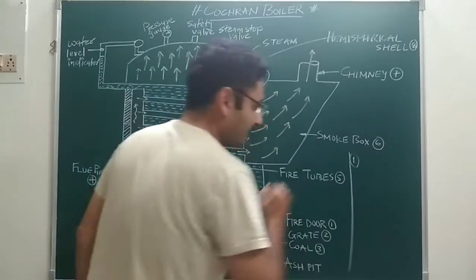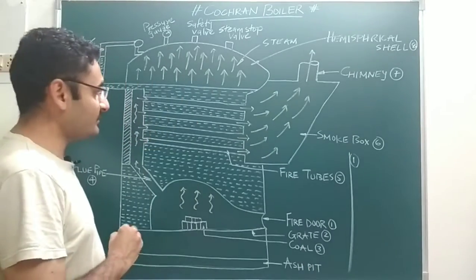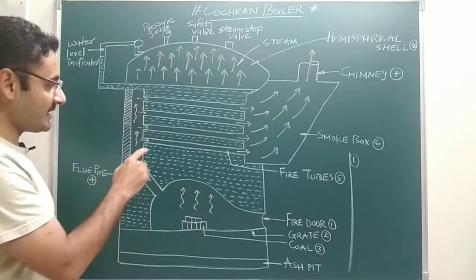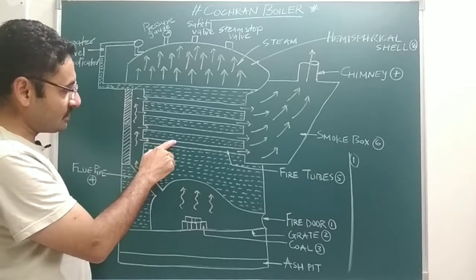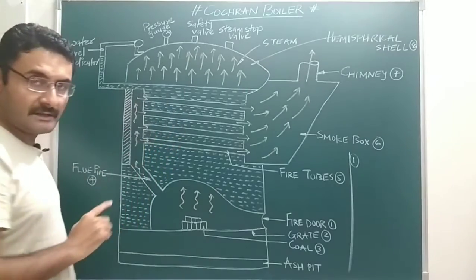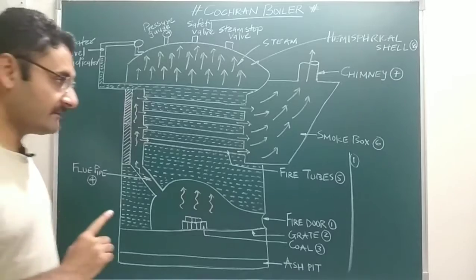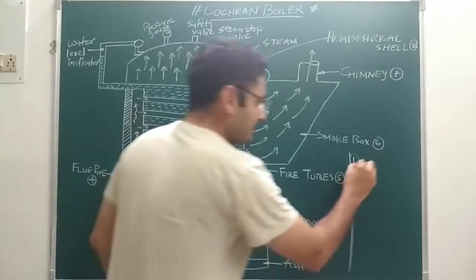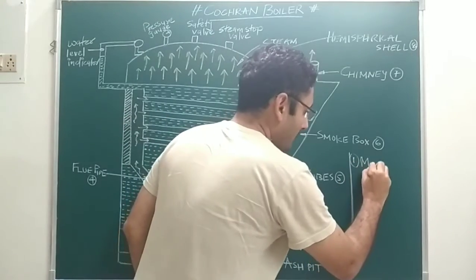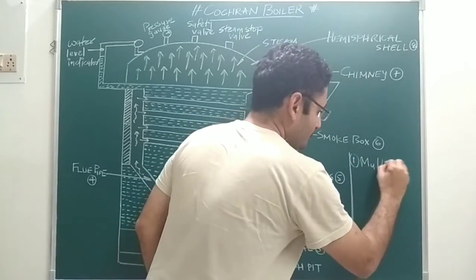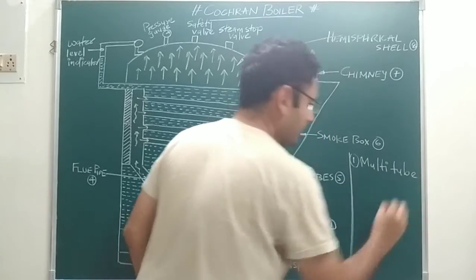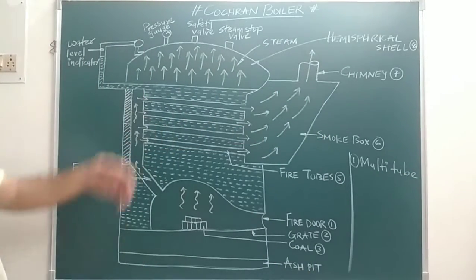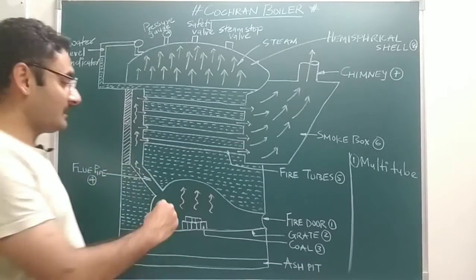Point number one: from the figure, as you can see, it has one, two, three, four tubes — more than one tube. That means we can say it is a multi-tube boiler, because it has more than one tube. That is why it is known as a multi-tube boiler.